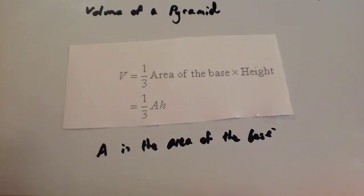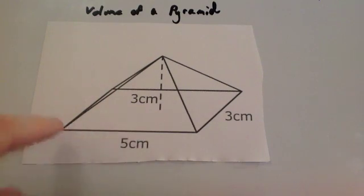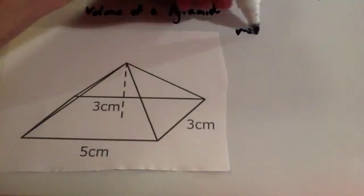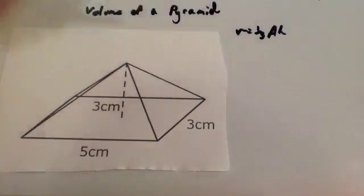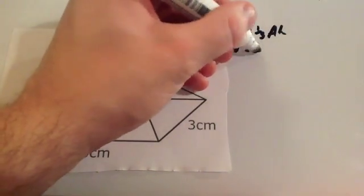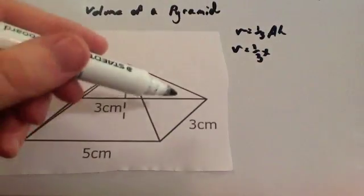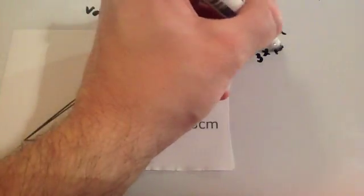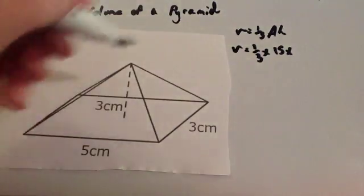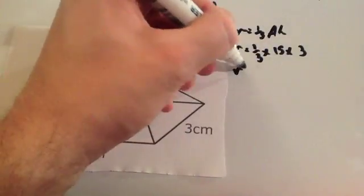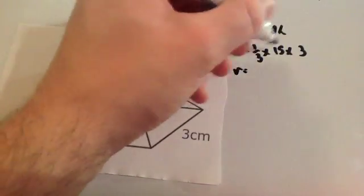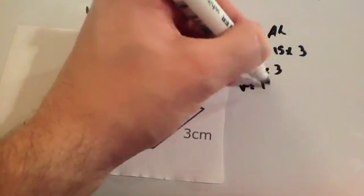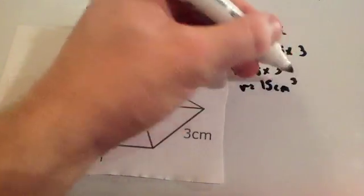So let's have a look at a typical example. Here we've got a rectangular-based pyramid. The volume equals a third times the area of the base, where the base is 5 times 3, which is 15, times the perpendicular height, which equals 3. So the volume equals a third times 15 times 3, which gives 15 centimeters cubed.